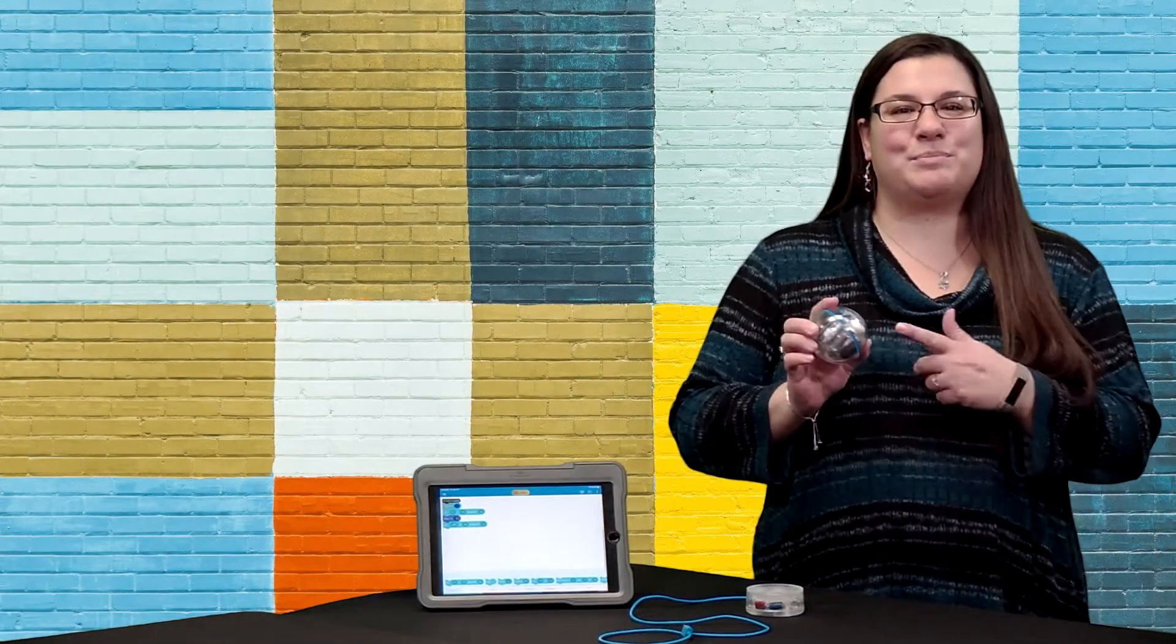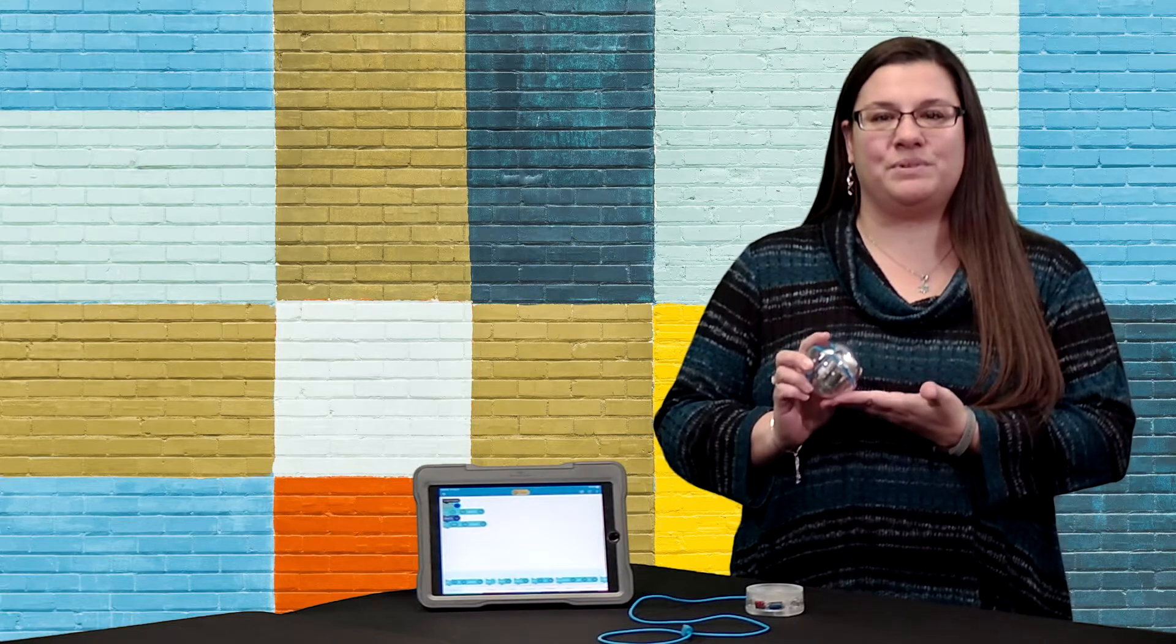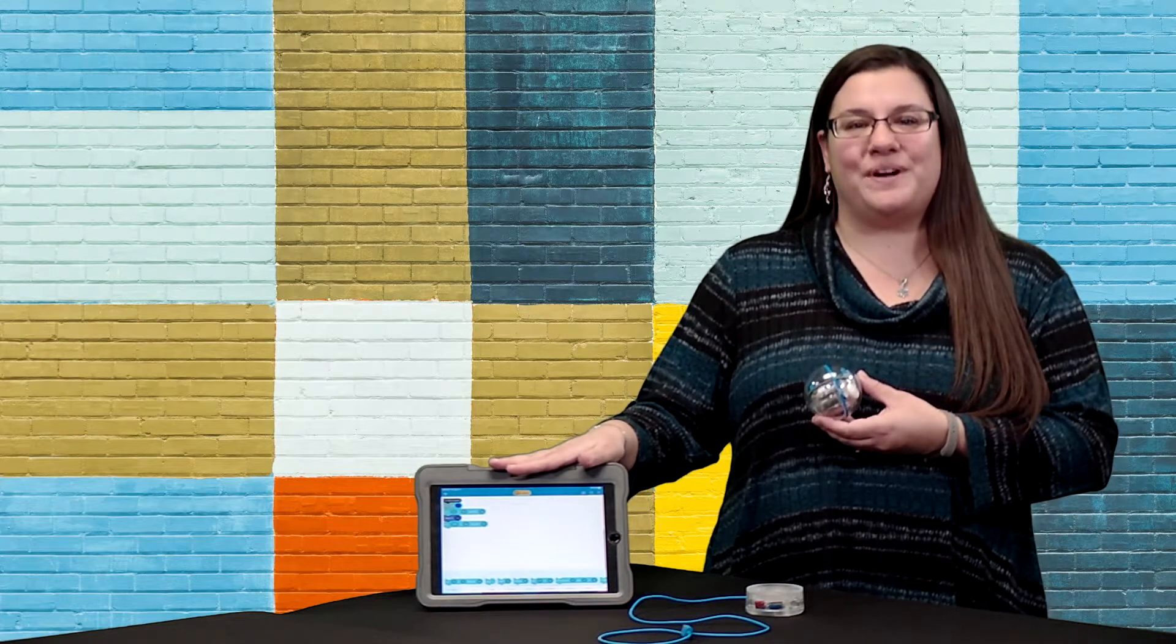Today we're looking at the Sphero Spark Plus model. It's a pretty high-tech robot disguised in a simple looking spherical design. It's programmed and controlled by a mobile device via Bluetooth. Let's show you how it works.